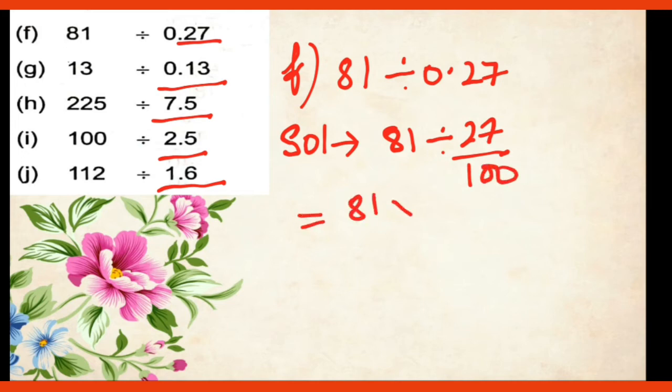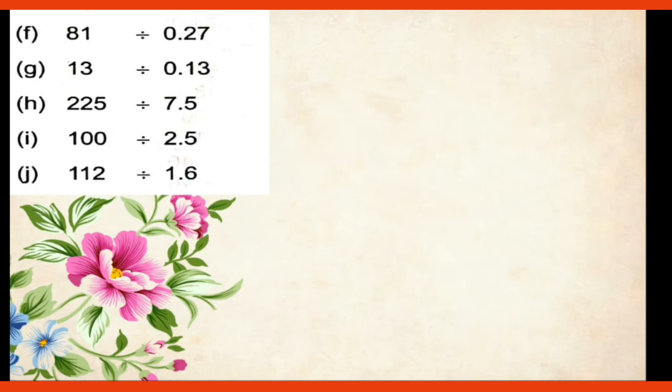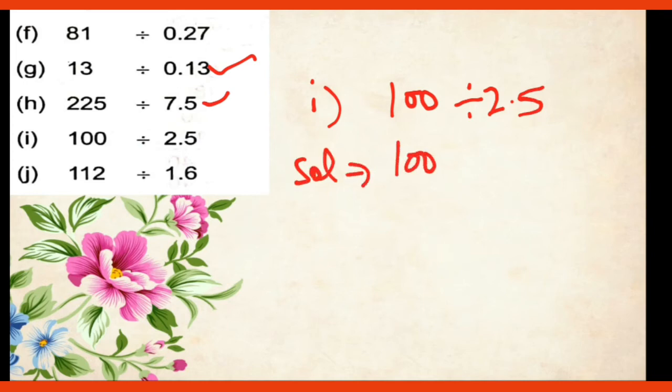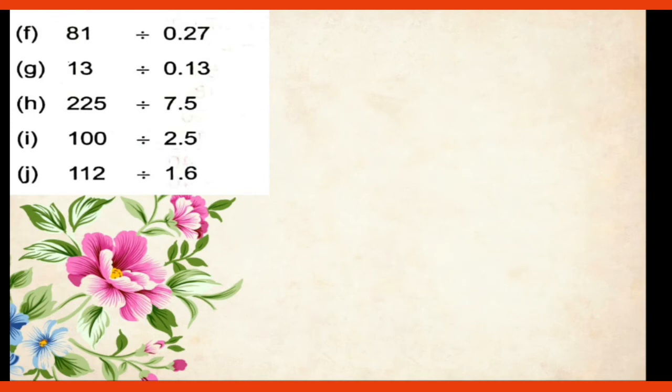So 81 divided by 27 over 100. And the next step is 81 multiplied by 100 upon 27. So 27 ones are 27 and 27 threes are 81 and 300 will be your answer. Now this G part you will do yourself and H part you will do yourself. I part you see 100 divided by 2.5. So what you will do 100 divided by 25 upon 10. And it is equal to 100 multiplied by 10 upon 25. And then 25 ones are 25. 25 fours are 100. So four tens are 40 upon 1. And that 40 is your answer. And the last J part you will do yourself.